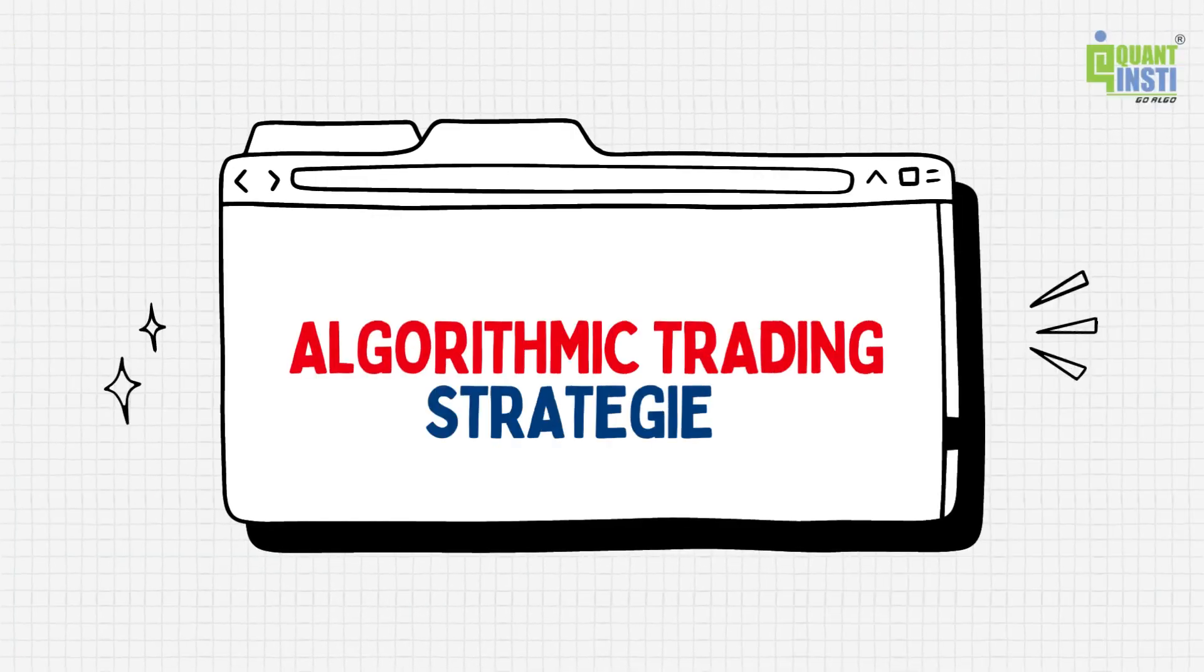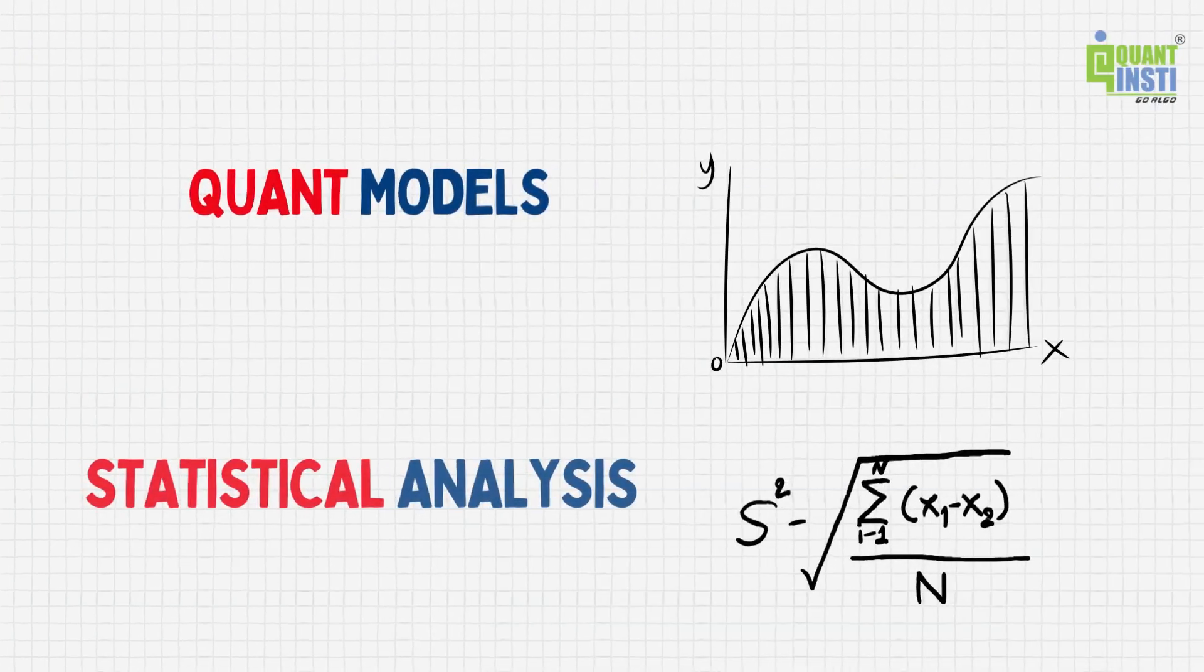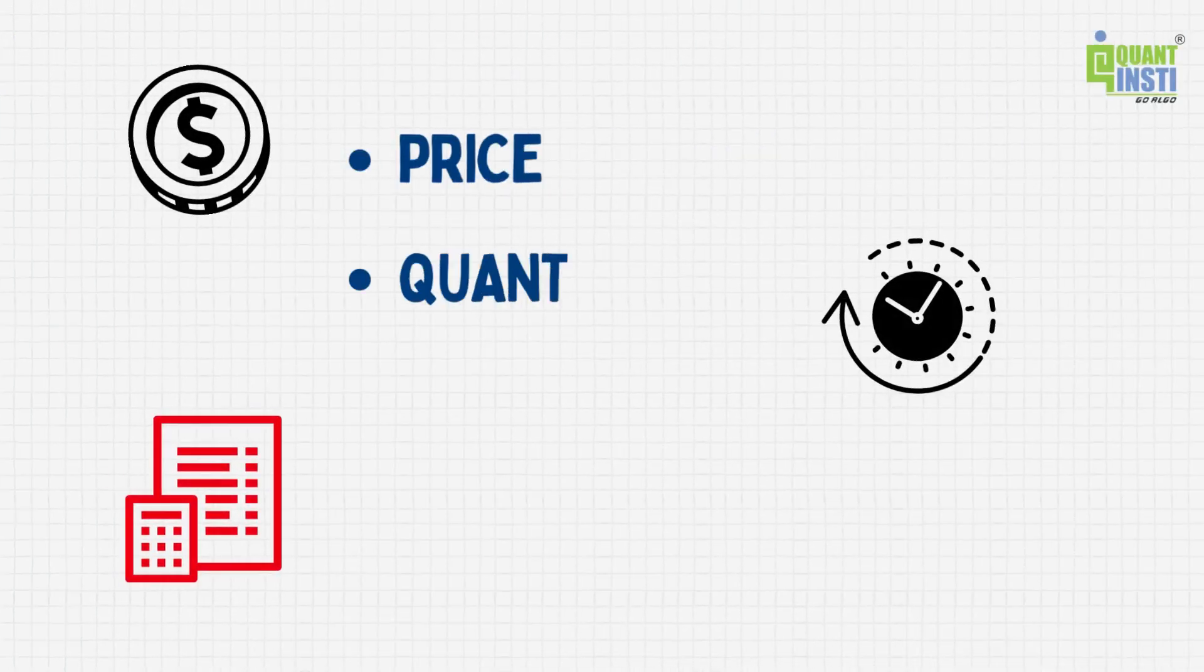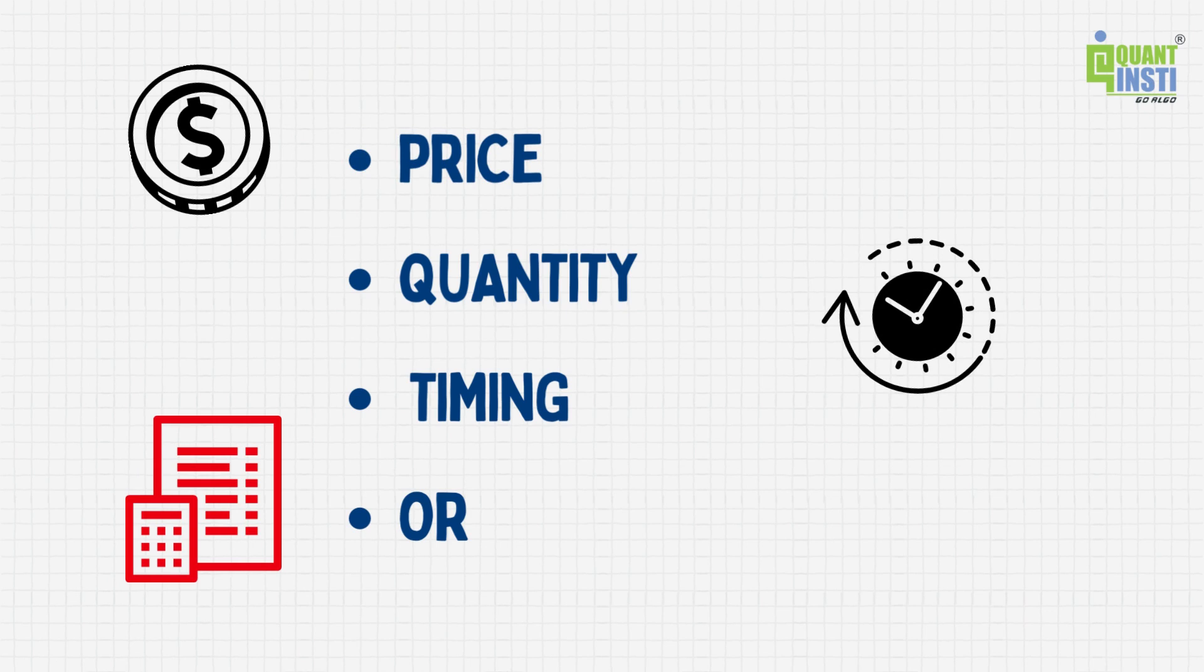Algorithmic trading strategies are built using quant models and use statistical analysis to identify opportunities and execute trades. The strategies use factors like price, quantity, timing, and order characteristics to generate trading signals.